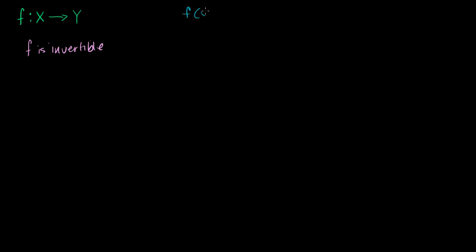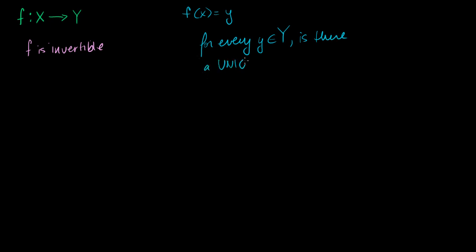The equation f of x is equal to y. I want to know that for every y that's a member of our codomain, so for every y, is there a unique solution x that's a member of our domain, such that f of x is equal to y?